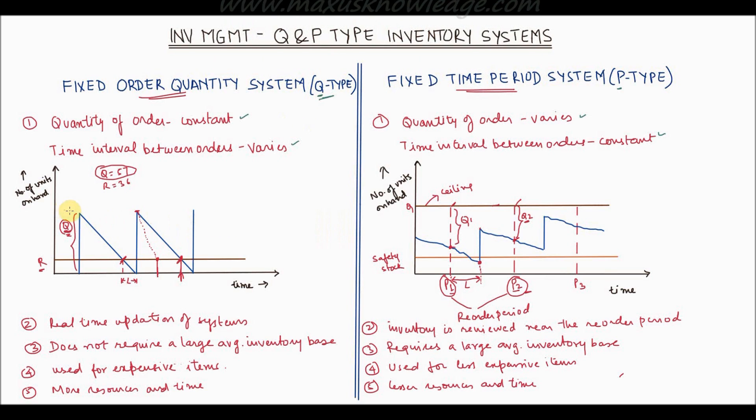Now let us understand how the fixed order quantity system works. As you can see in this graph, the x-axis represents time while the y-axis represents number of units on hand.